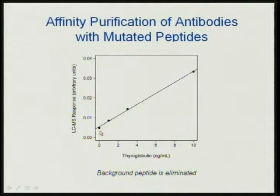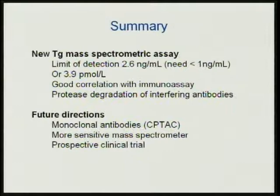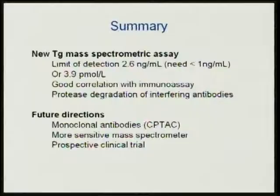To summarize: we have a new thyroglobulin mass spectrometric assay with a limit of detection of about 2.6 to 3 nanograms per mil — about threefold off our target. It has a good correlation with the immunoassay, and the best part is that we're destroying anti-reagent antibodies and autoantibodies by trypsin digestion, so they can't interfere with our assay anymore. There's a program from the National Cancer Institute called CPTAC making monoclonal antibodies to our peptides, we're trying more sensitive mass spectrometers, and hopefully one day we'll use a prospective clinical trial to show that a mass spectrometric thyroglobulin assay does something good for patients.